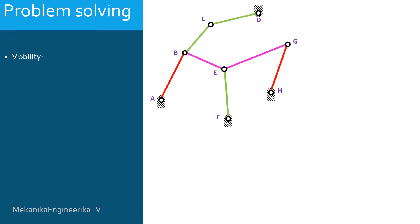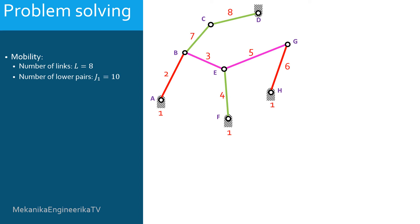We are going to determine in a first step the mobility of this mechanism. The mechanism is built from 8 bars, thus the number of links L is equal to 8. The number of lower pairs is equal to 10. There are 6 revolute pin joints of simple order. These are the pin joints in A, C, D, F, G, and H.